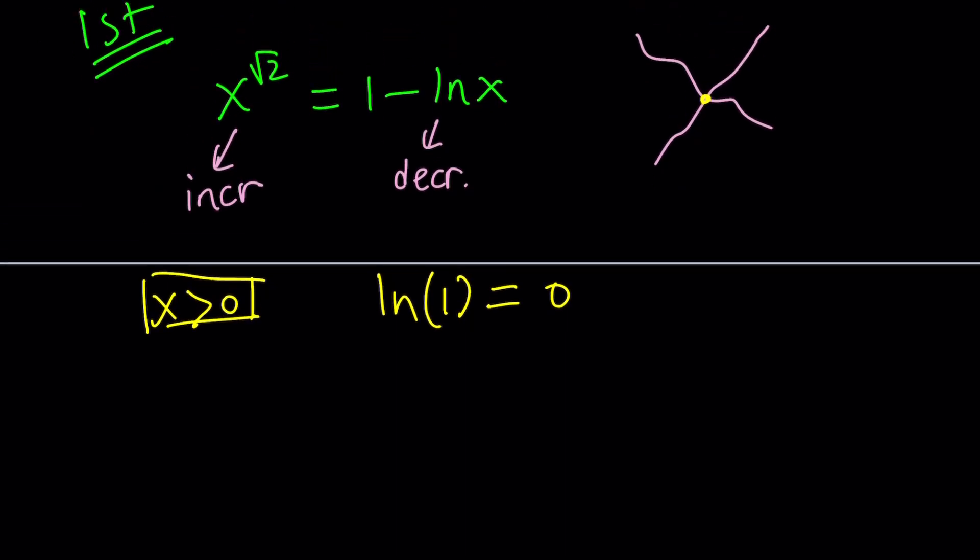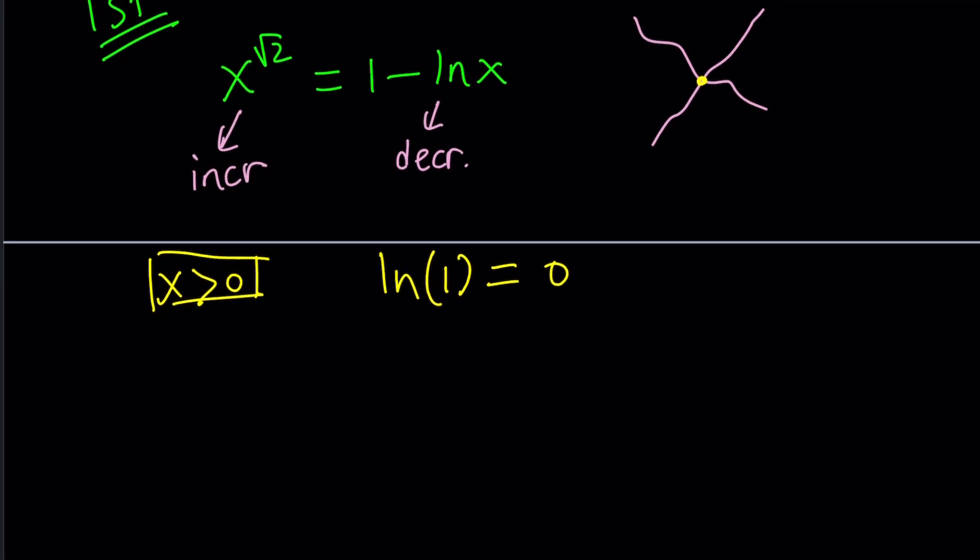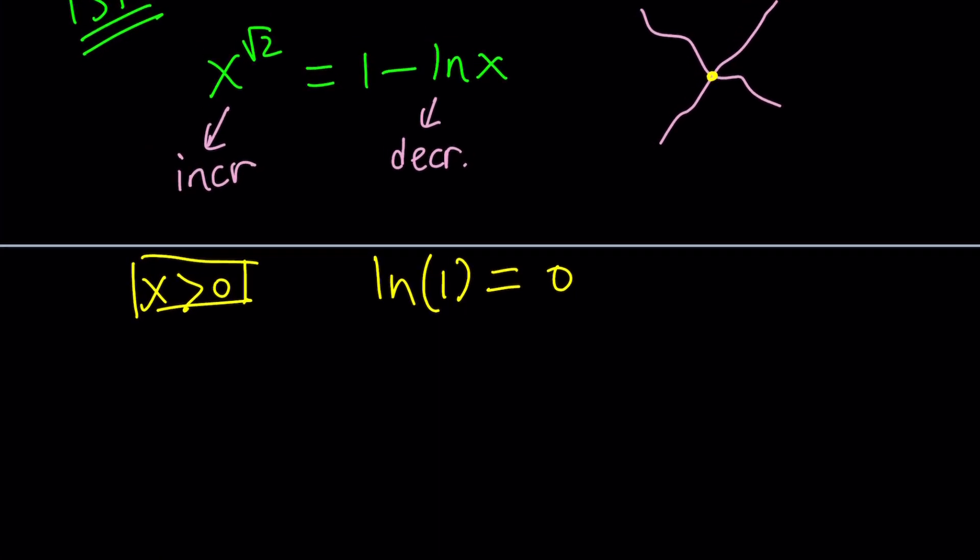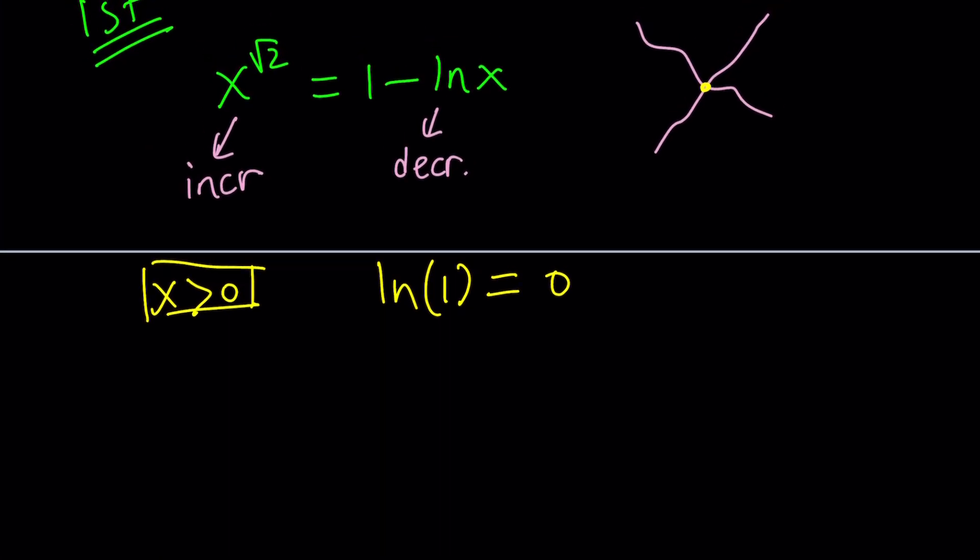Pretty much any log 1 is 0. So, we get, if we replace x with 1, we get 1 minus 0, and that gives us 1. And on the left-hand side, we also get 1, if we replace x with 1. In other words, if you replace x with 1, you get 1 to the power root 2 equals 1 minus ln 1. That's true, because this is 0. And 1 to the power root 2 is 1. Well, at least in the real world. What happens in the complex world? That's a very different story. But, x equals 1 works.